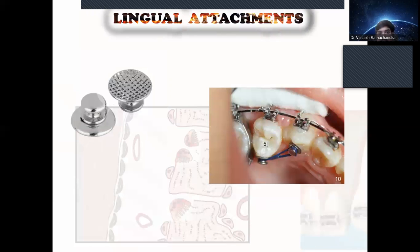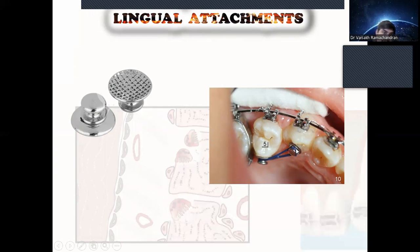Next are lingual attachments. We can bond the lingual attachment on the lingual side of the tooth — mainly for rotation correction.